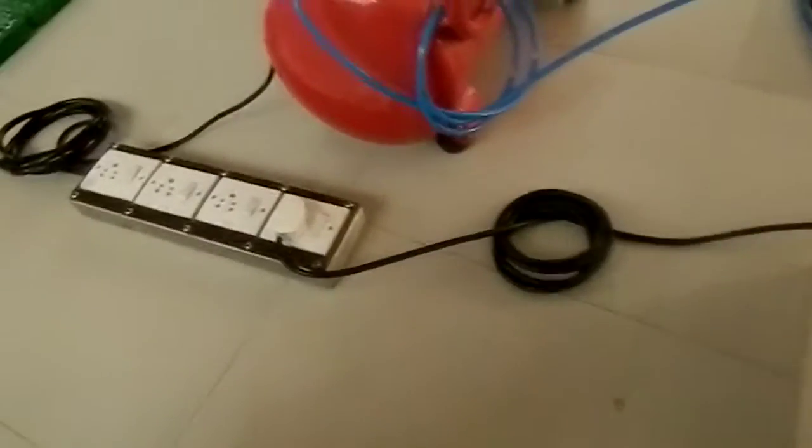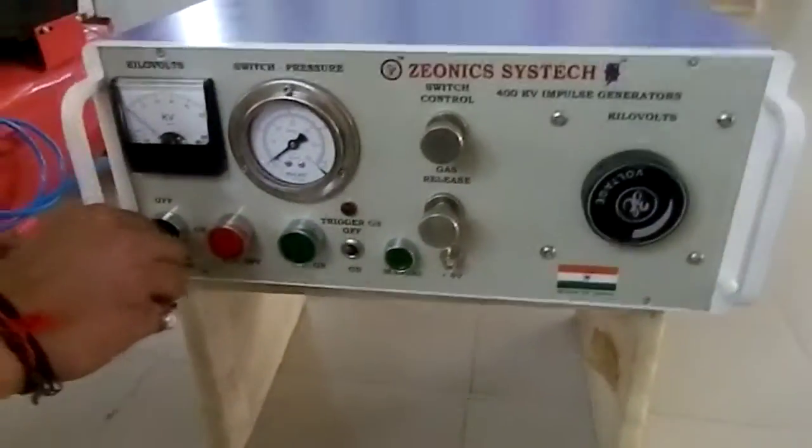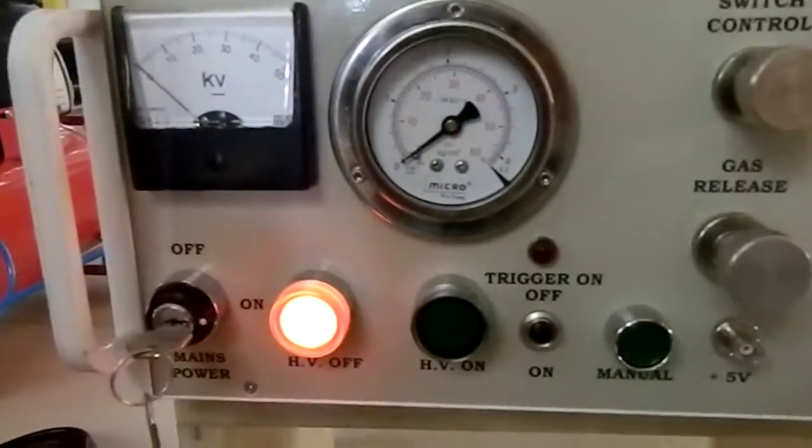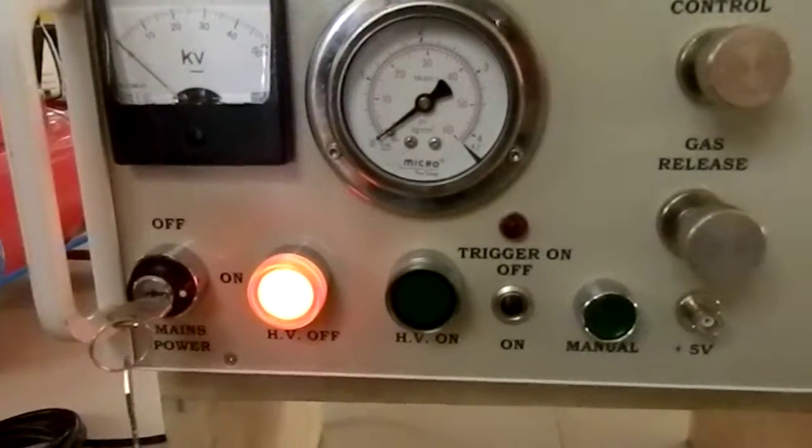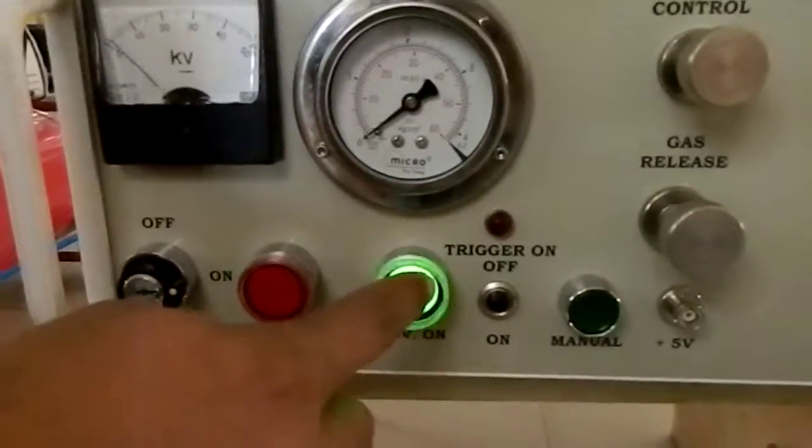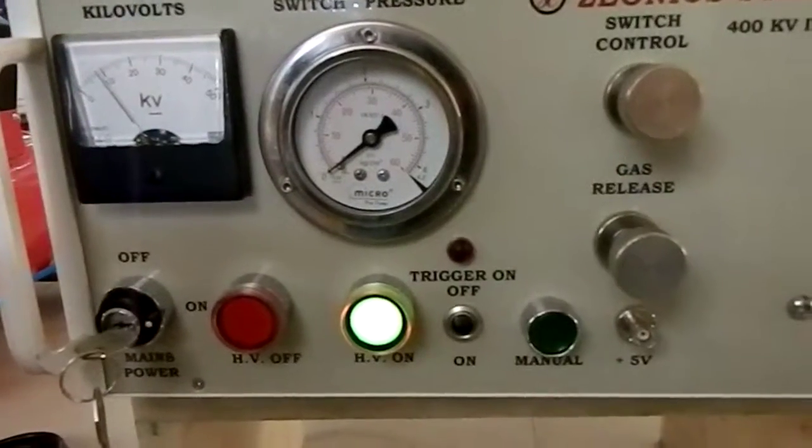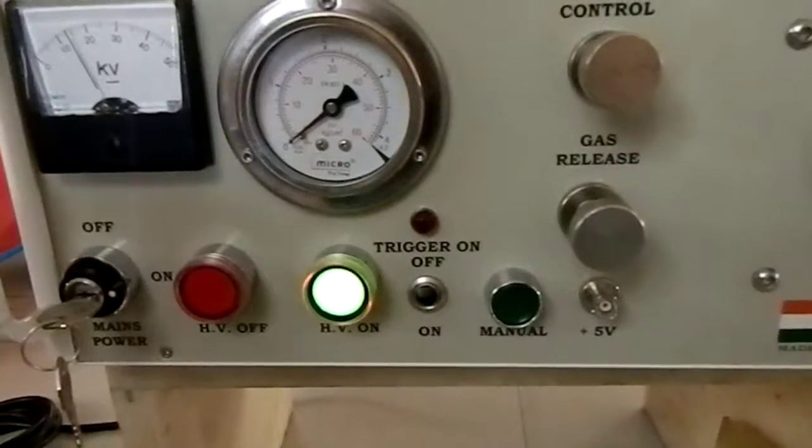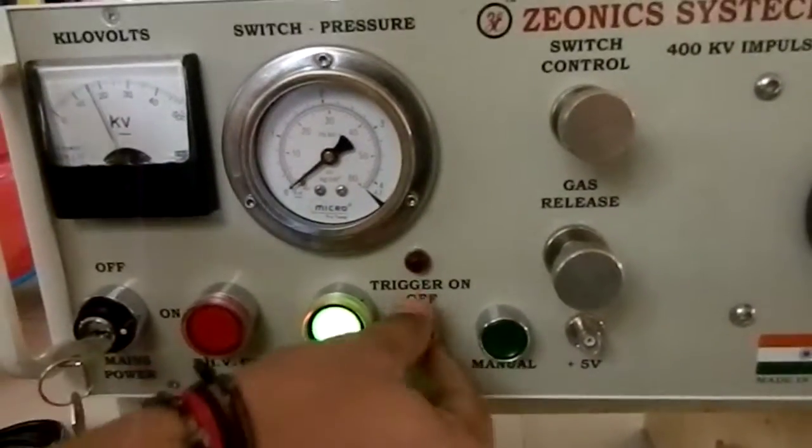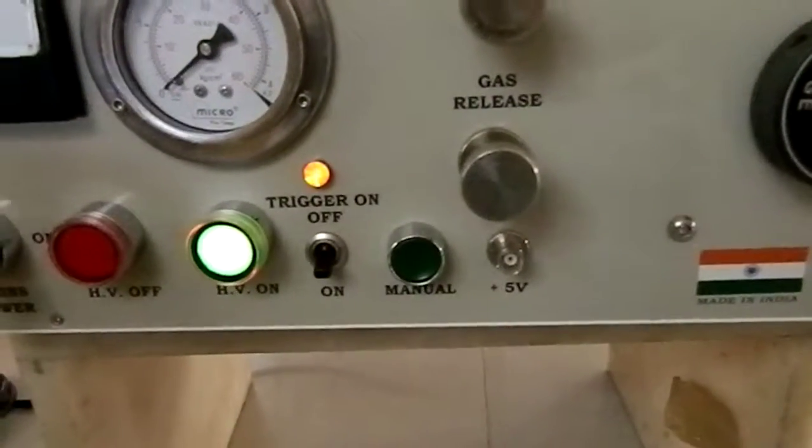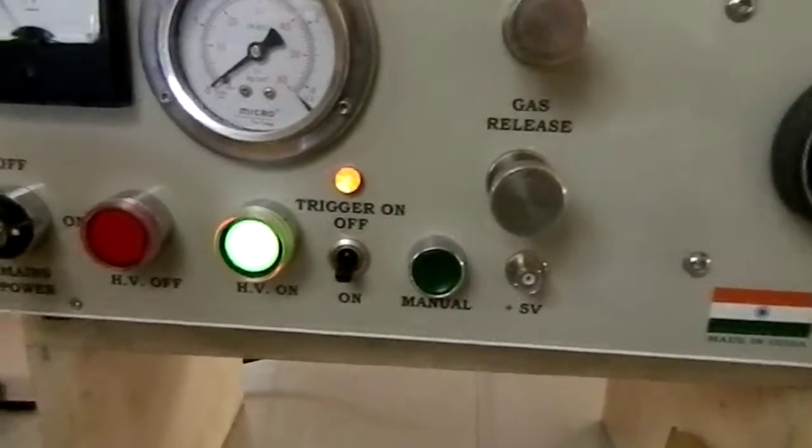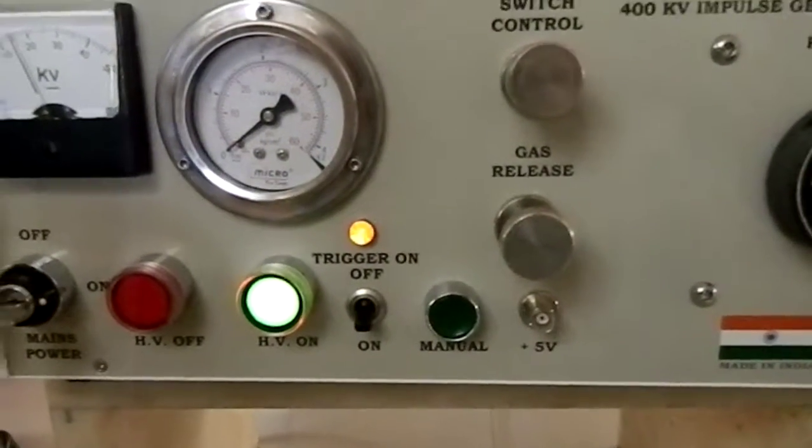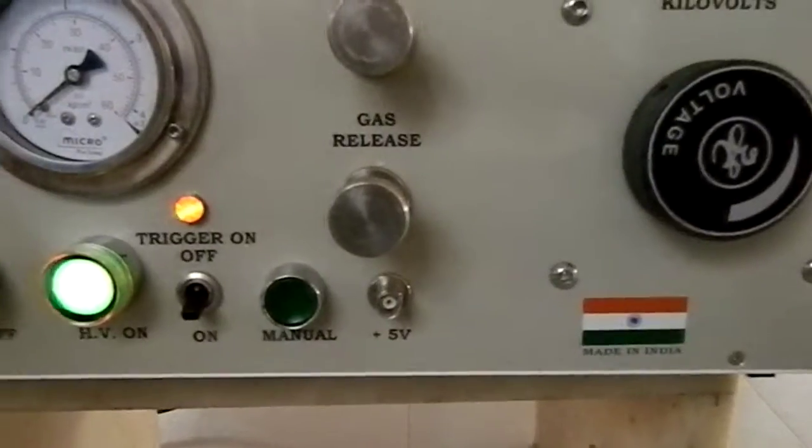After the power is switched on, turn the key switch. When you turn the key switch, press the green high voltage on button and the high voltage will switch on. Switch on the trigger button and the trigger generator will be on. This is the manual switch for the trigger generator and this is the plus 5 volt pulse generator.